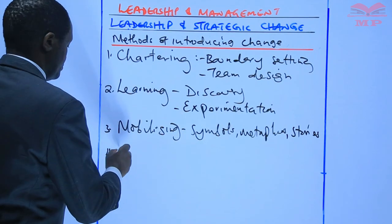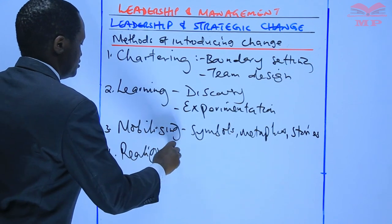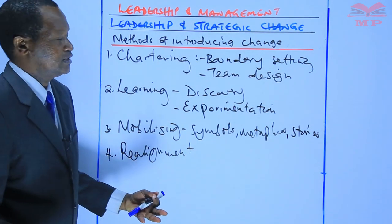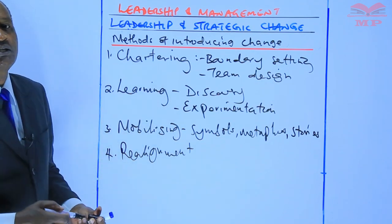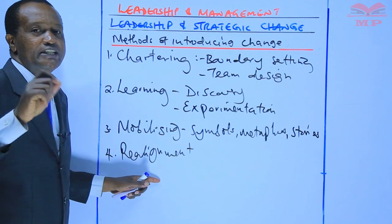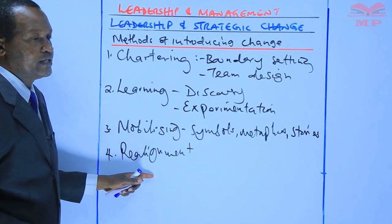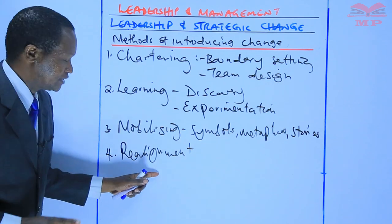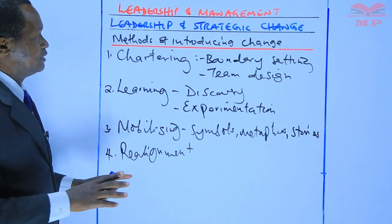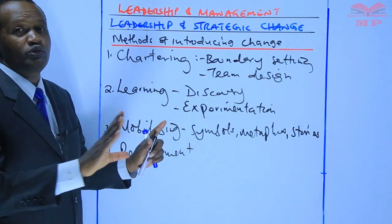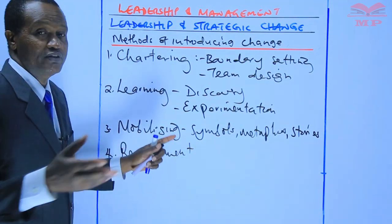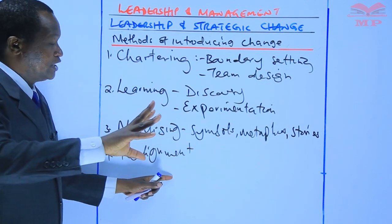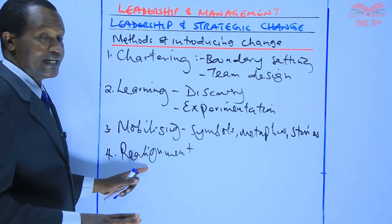The fourth method is realignment. Realignment is a series of activities and actions aimed at reshaping the organisational context, including the definition of roles and reporting relationships, as well as new approaches to monitoring, measurement, and compensation. When implementing change, it is important to have a process of realignment — putting in place activities that will help in monitoring, redefining roles, and having communication channels realigned.